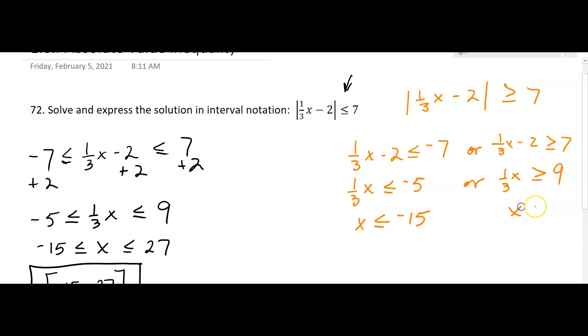So that would be from negative infinity to negative 15—you're going to put a square bracket on that—union with, we also want the values greater than or equal to 27.